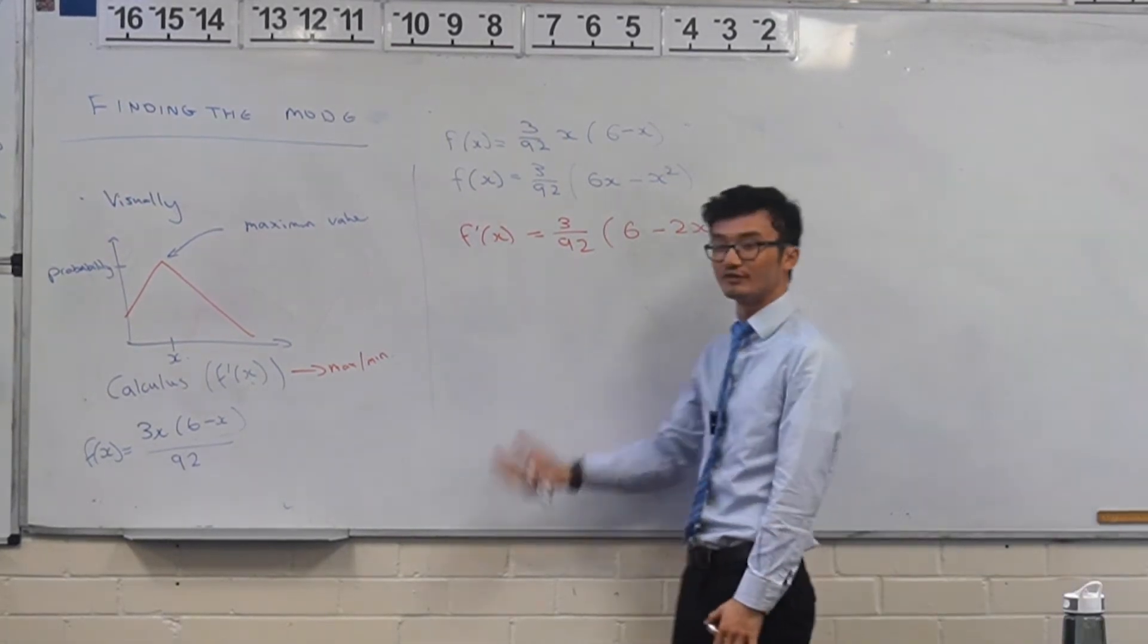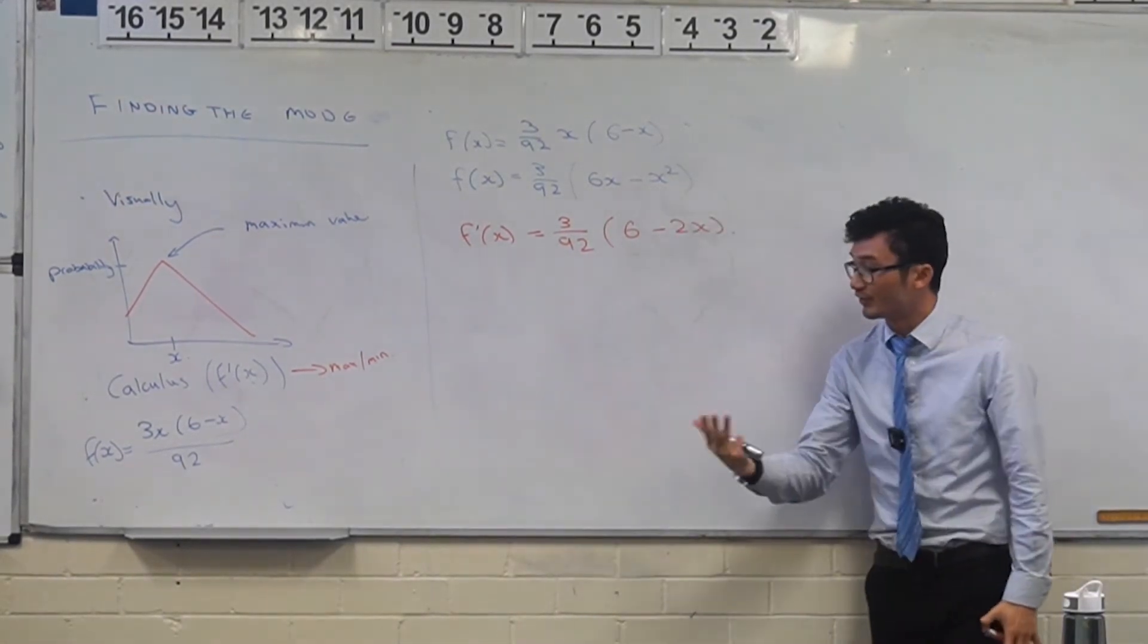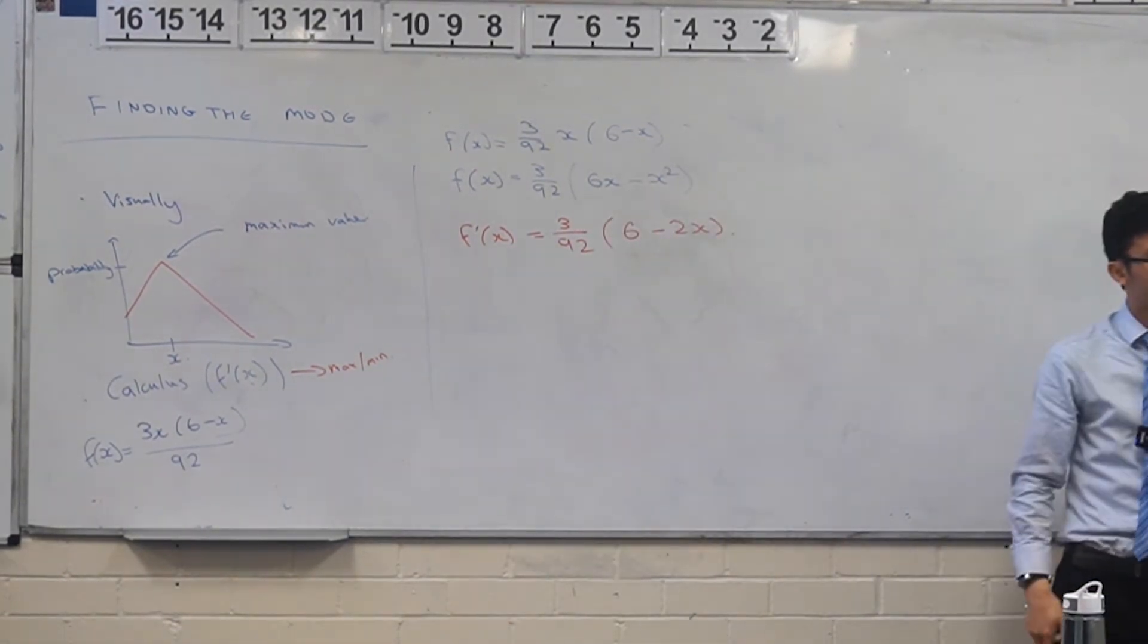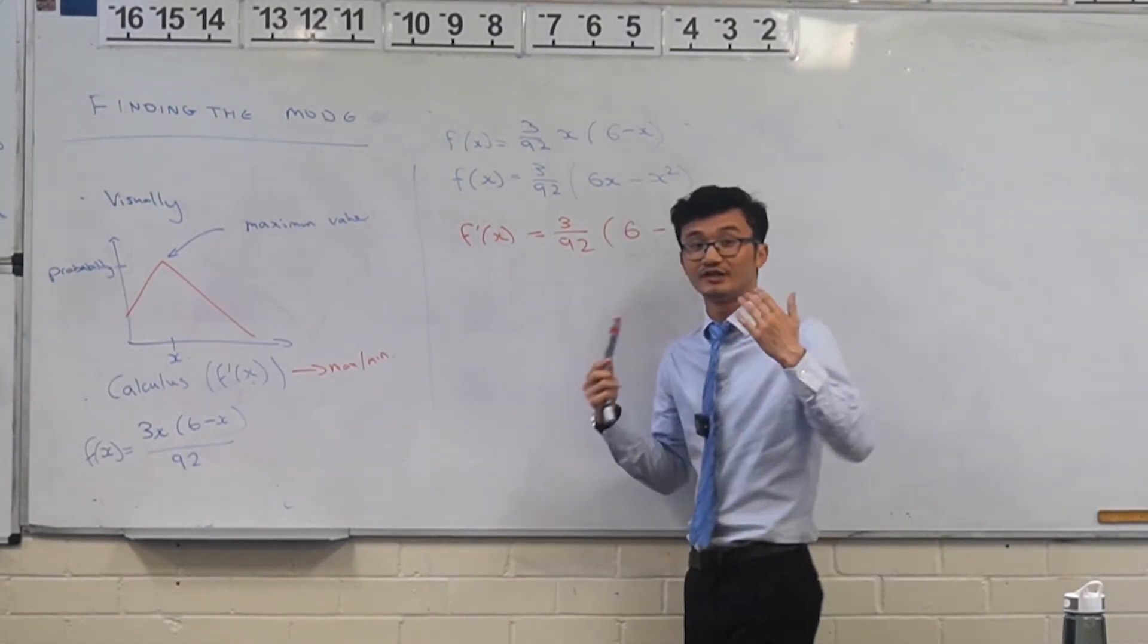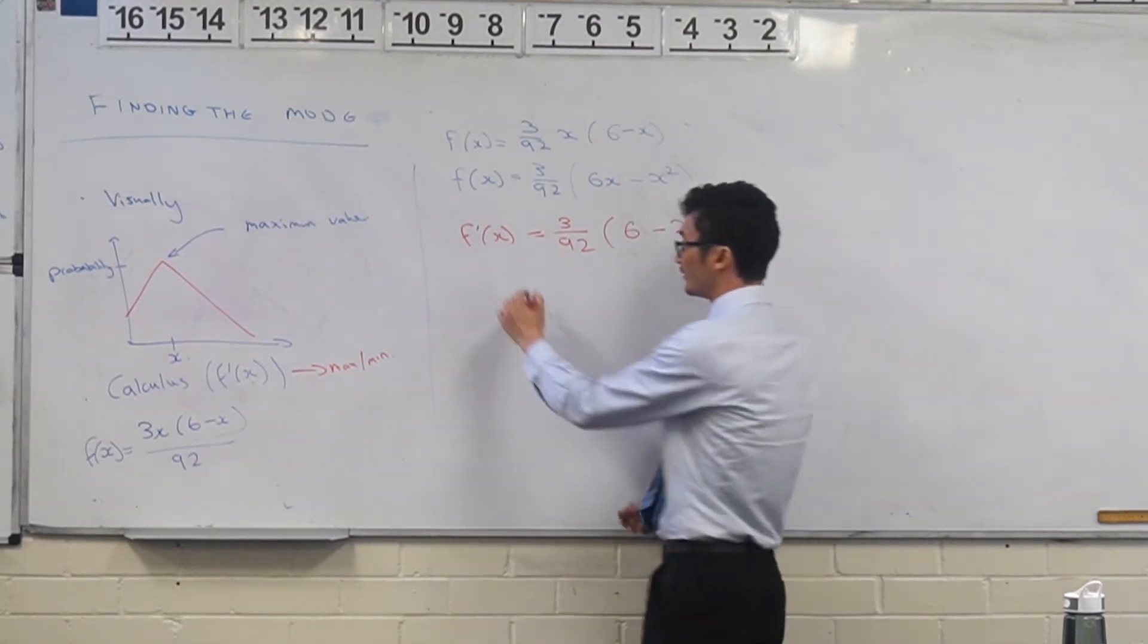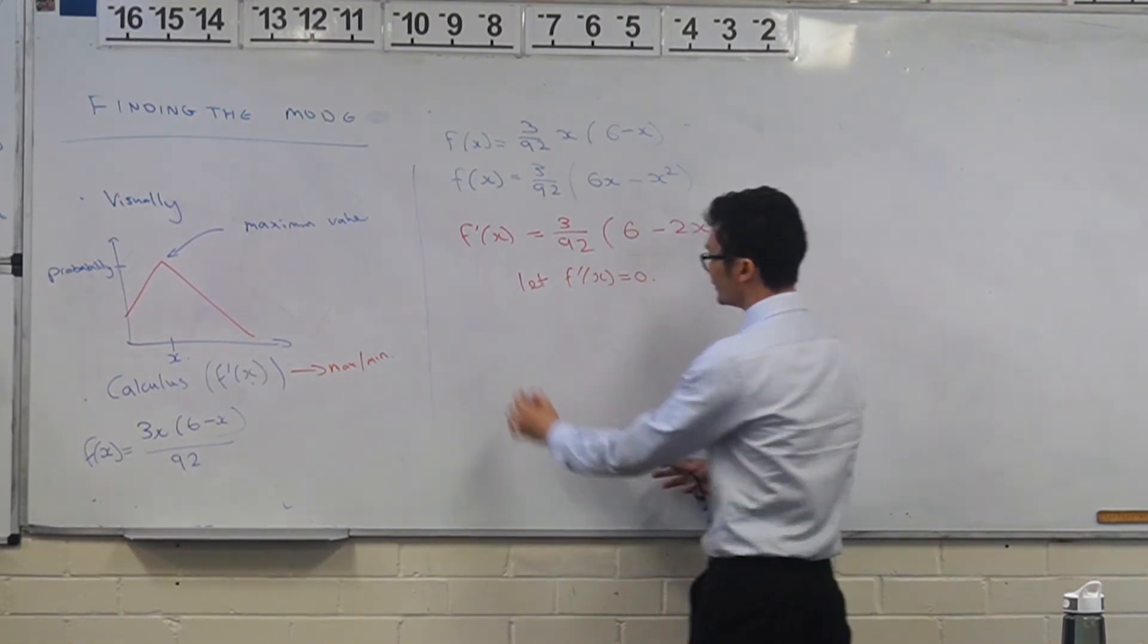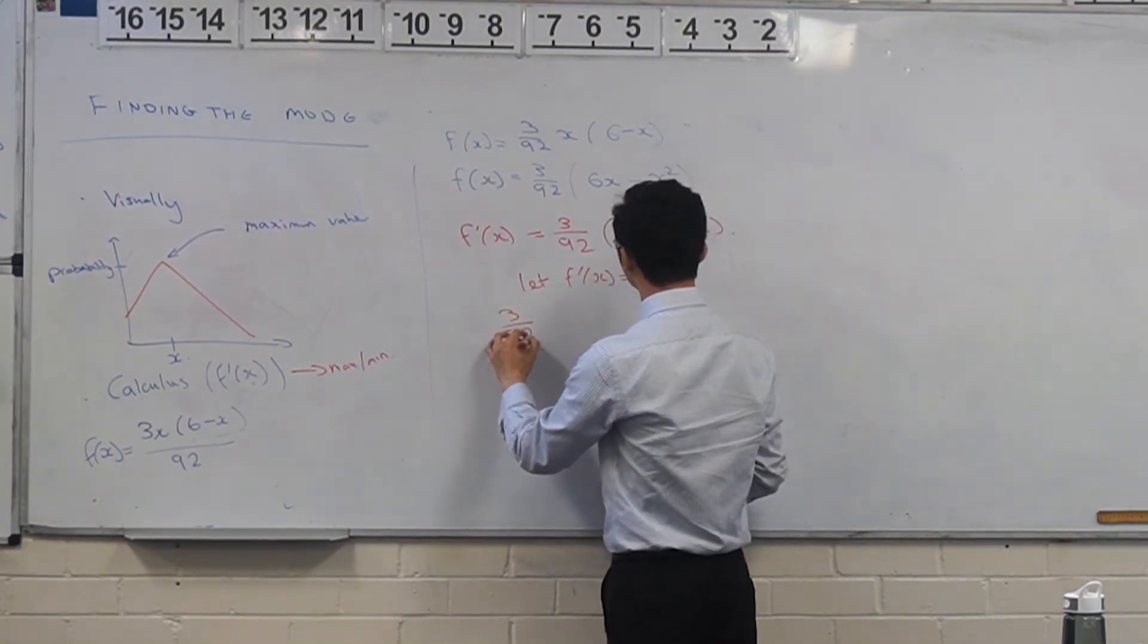So that's how you can take the derivative more easily. And then once you have the derivative to find max and mins, how do we - good. Please communicate what you're doing with the marker. So you let f dash of x equal to 0, and so we have this here: 3/92 outside of 6 minus 2x is equal to 0.